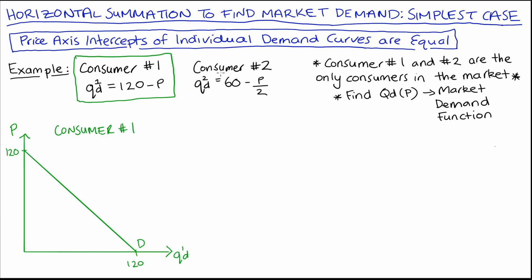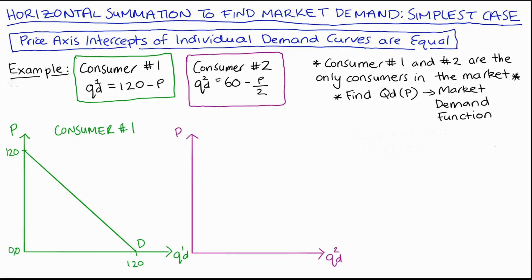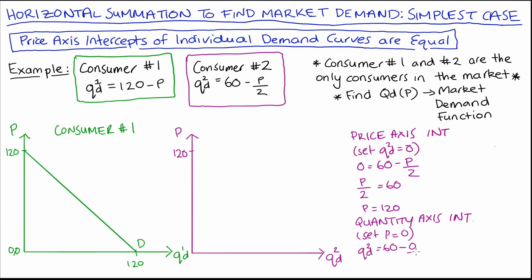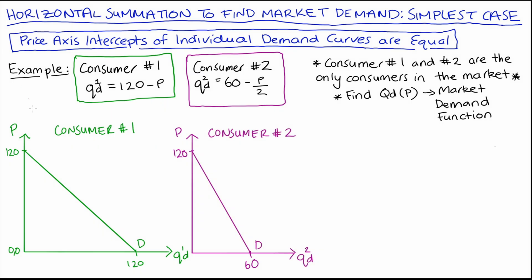Let's do the same thing for consumer number two. I'll find the price axis intercept by setting QD2 equal to zero, and I get zero is equal to 60 minus P over two. Adding P over two to both sides, I get P over two is equal to 60, and that solves for price is equal to 120 — I just multiply both sides by two. I'll mark that in as our price axis intercept. Setting P equal to zero solves for QD equal to 60. I'll put that point in, join those two points up, and that's consumer number two's demand curve.